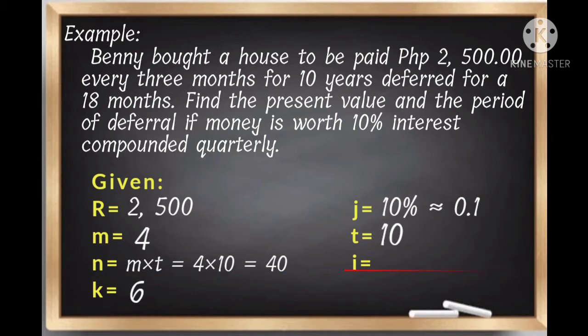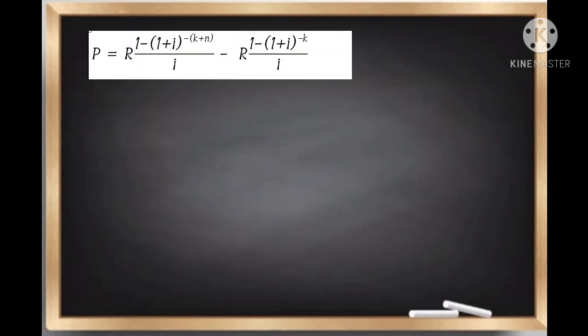For the interest rate per period, we use the formula J divided by M. So, 0.1 divided by 4 equals 0.025. And our period of deferral K is 6.